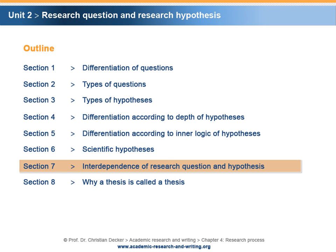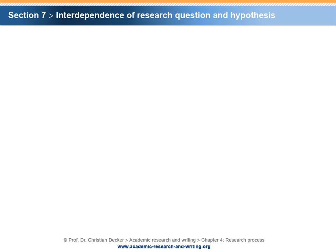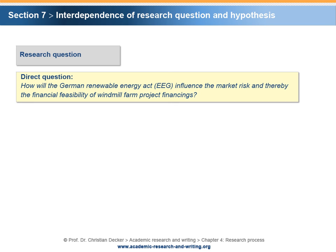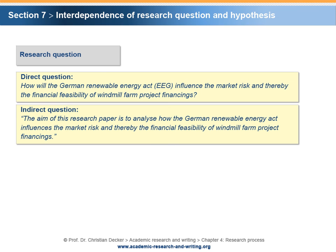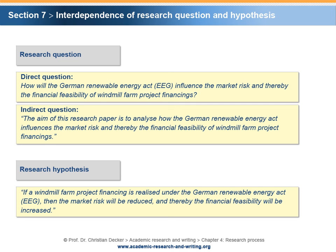Section 7: Interdependence of Research Question and Hypothesis. The interdependence of the research question and the hypothesis is shown on the basis of our example. First, the research question posed as a direct question is: how will the German Renewable Energy Act (EEG) influence the market risk, and thereby the financial feasibility of windmill farm project financings? In the research paper, the research question is posed as an open-ended, indirect question: the aim of this research paper is to analyze how the German Renewable Energy Act influences the market risk, and thereby the financial feasibility of windmill farm project financings. Finally, the research hypothesis states a relationship: if a windmill farm project financing is realized under the German Renewable Energy Act (EEG), then the market risk will be reduced, and thereby the financial feasibility will be increased.